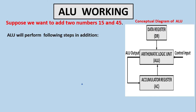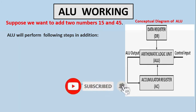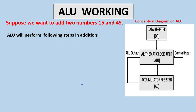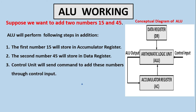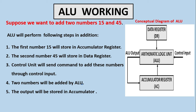To illustrate ALU working, suppose we want to add two numbers, 15 and 45. The first number, 15, will be stored in the accumulator register, and the second number, 45, will be stored in the data register. The control unit will send a command to add these numbers through control input. The two numbers will be added by the arithmetic logic unit, the output will be stored in the accumulator register, and finally the result, 60, will be sent to main memory.